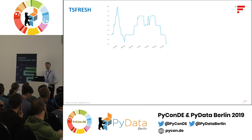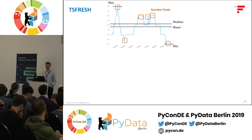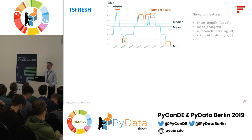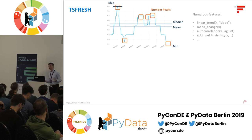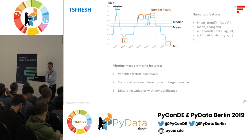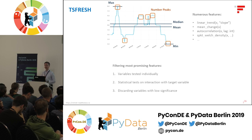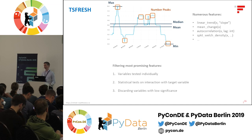TSFresh works on time series. When you want to extract features from a time series, it gives you not just minimum and maximum, but also subtle features like the number of peaks. It has many more implemented, is very well documented, and can create many features. Conveniently, it also selects them down using a filtering method: potential features are evaluated individually, statistically tested for interaction with the target variable — ideally on a training set — and those without good interaction are discarded by the library.